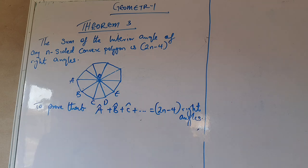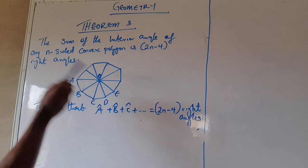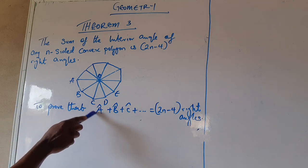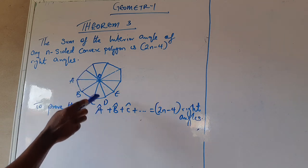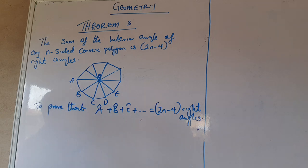If you look at this, this is our convex polygon diagram. We have a polygon with vertices A, B, C, D, E forming triangles — that is a convex polygon. Now we want to prove that angle A, angle B, angle C, angle D, and so on and so forth is equal to 2n - 4 right angles.